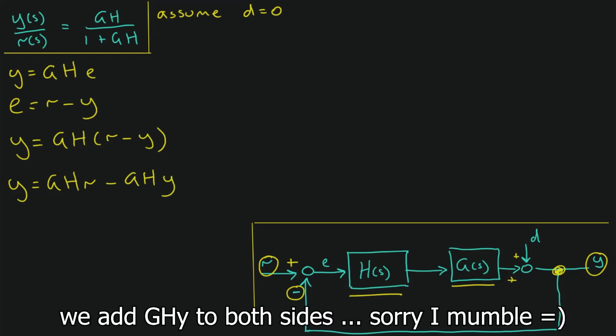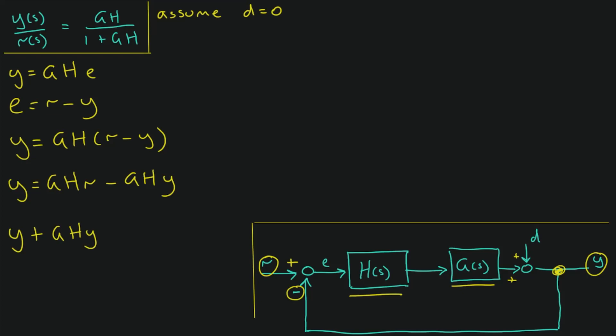We add Y to both sides. So we have Y plus GHY is equal to GHR. We collect our terms and pull the Y out. So we have Y(1 plus GH) is equal to GHR.